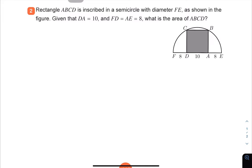The diameter FE means the radius is equal to half of FE. From the center to anywhere on the circumference, we know that the radius is going to be the same.